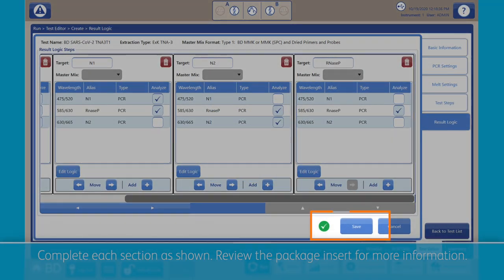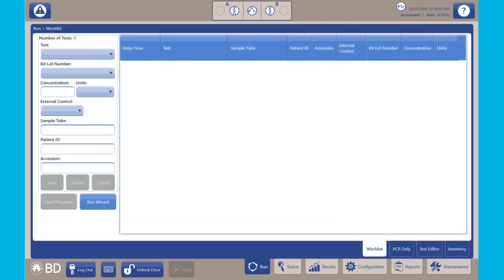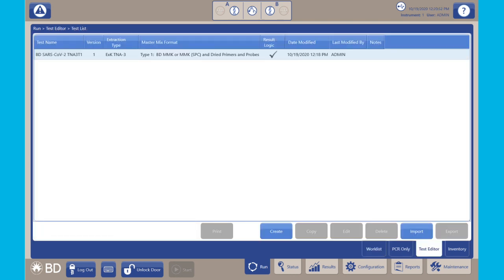Click Save after all information has been entered into the Test Editor. The UDP only needs to be created once and can be used for subsequent runs.